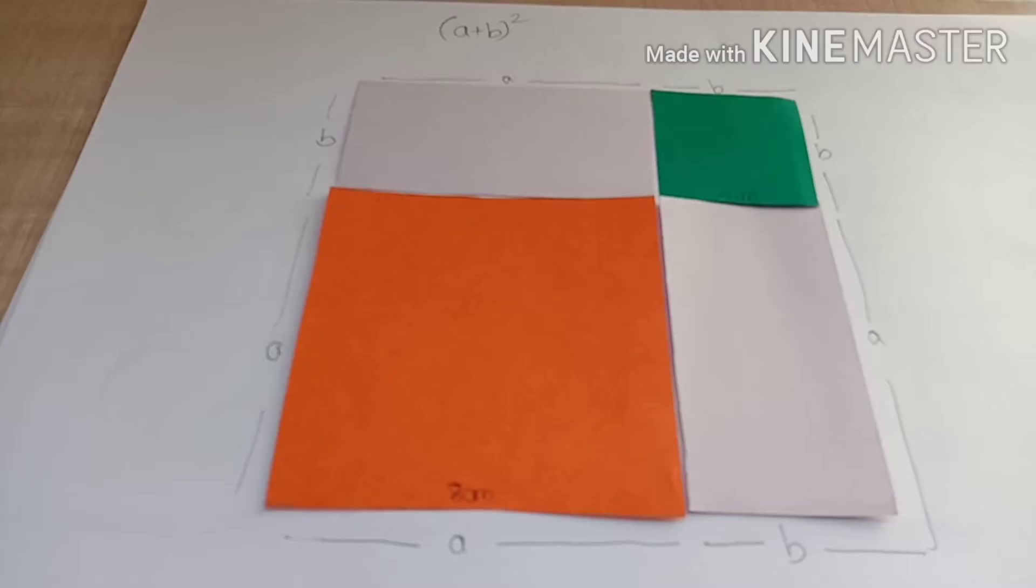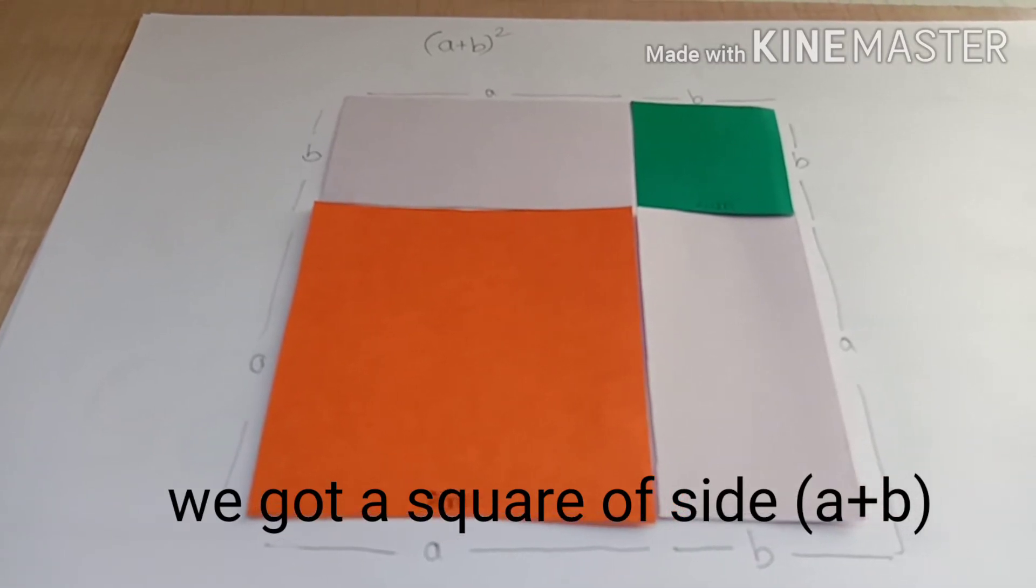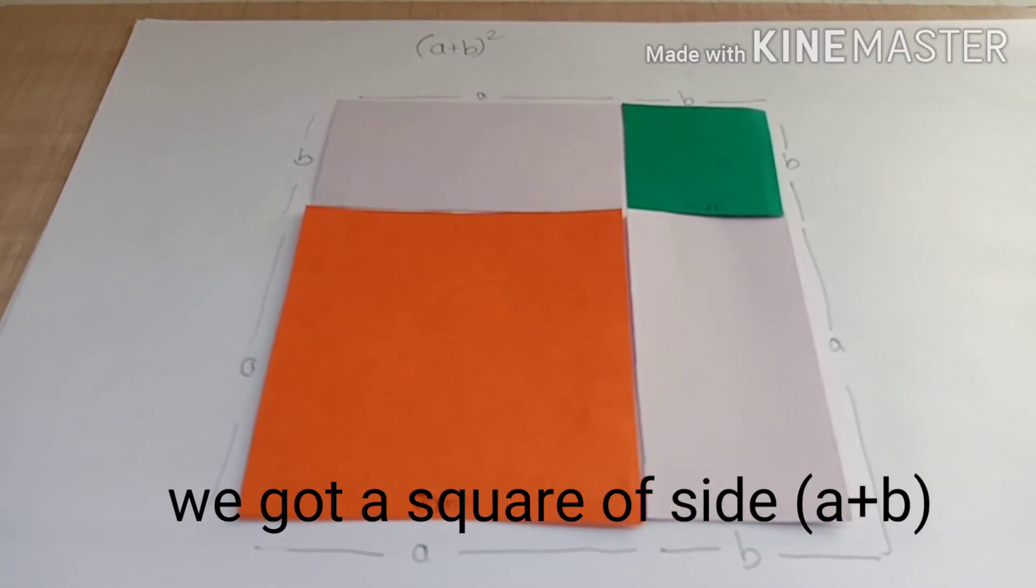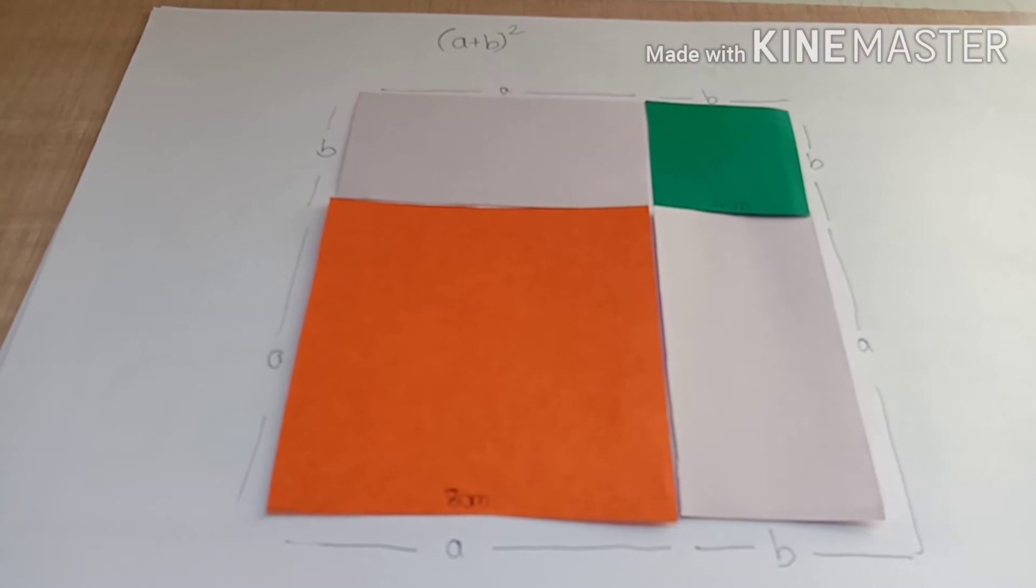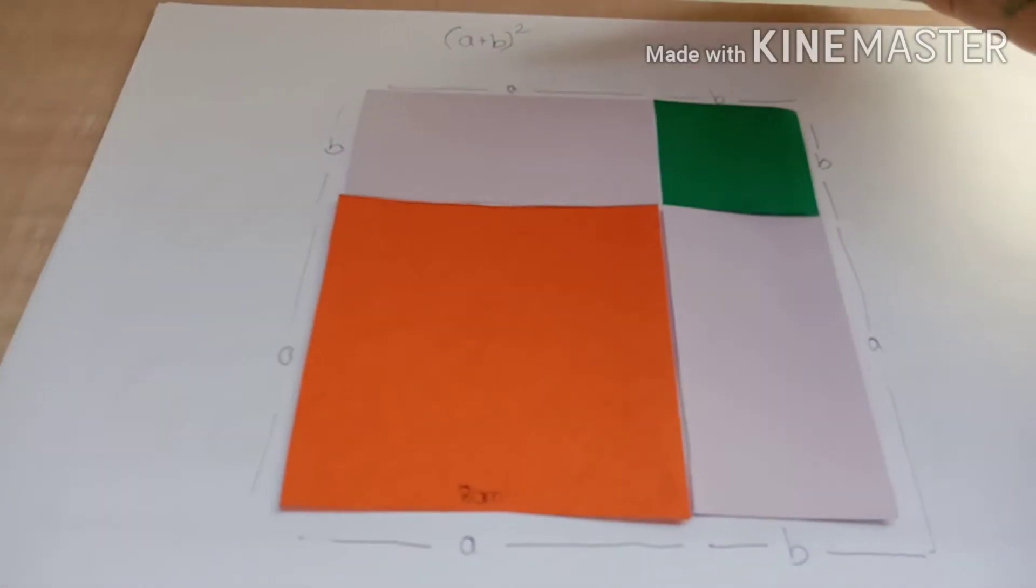So now this is a plus b measurement. Now what I am going to do is I am going to get the RHS part of this identity because I got LHS now, (a+b) whole square.